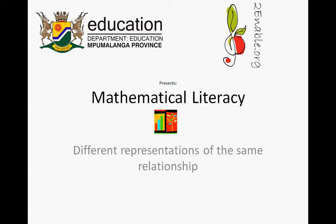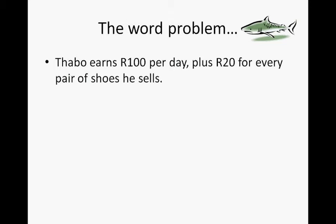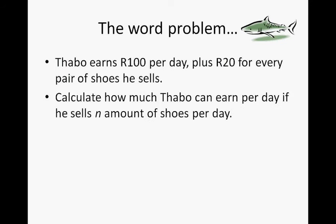Enable.org presents: Mathematical Literacy — Different Representations of the Same Relationship. When we represent relationships, we mostly start with word problems. Here is the word problem: Tabu earns 100 rand per day plus 20 rand for every pair of shoes he sells. Calculate how much Tabu can earn per day if he sells n pairs of shoes per day.